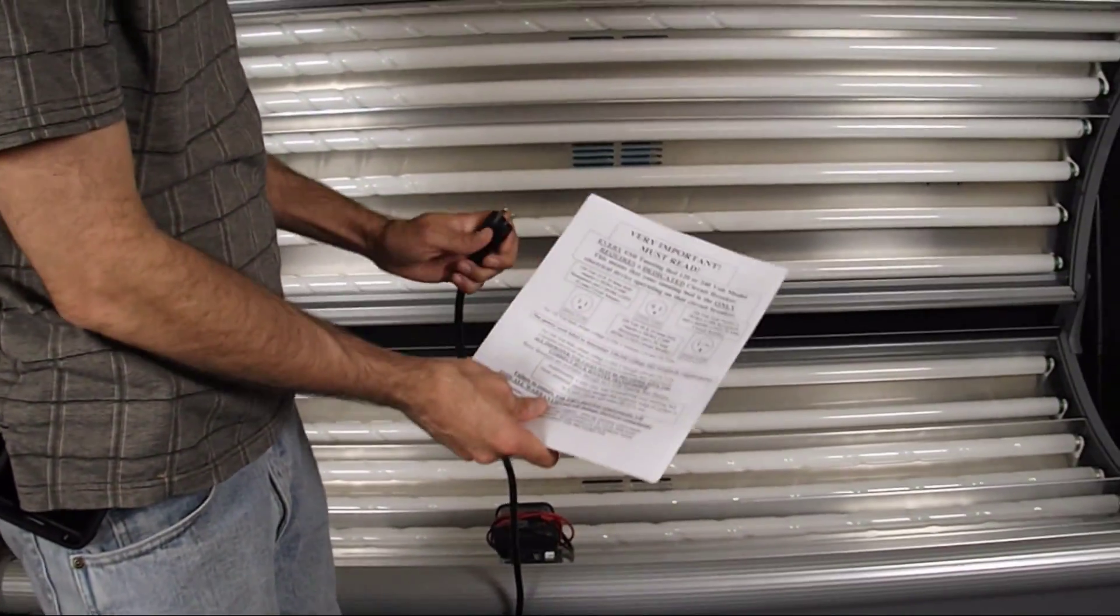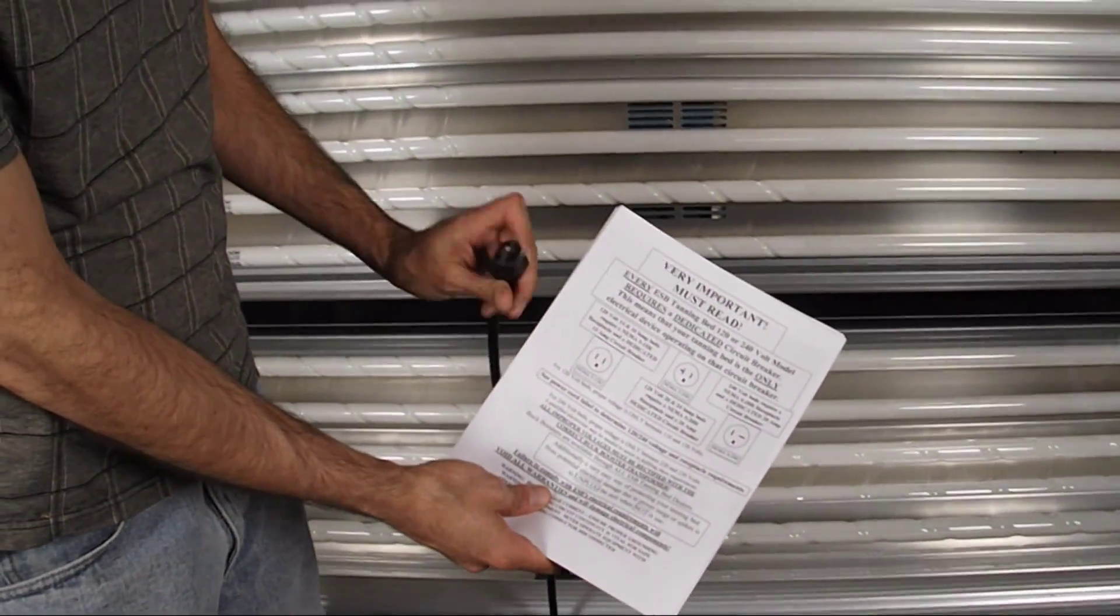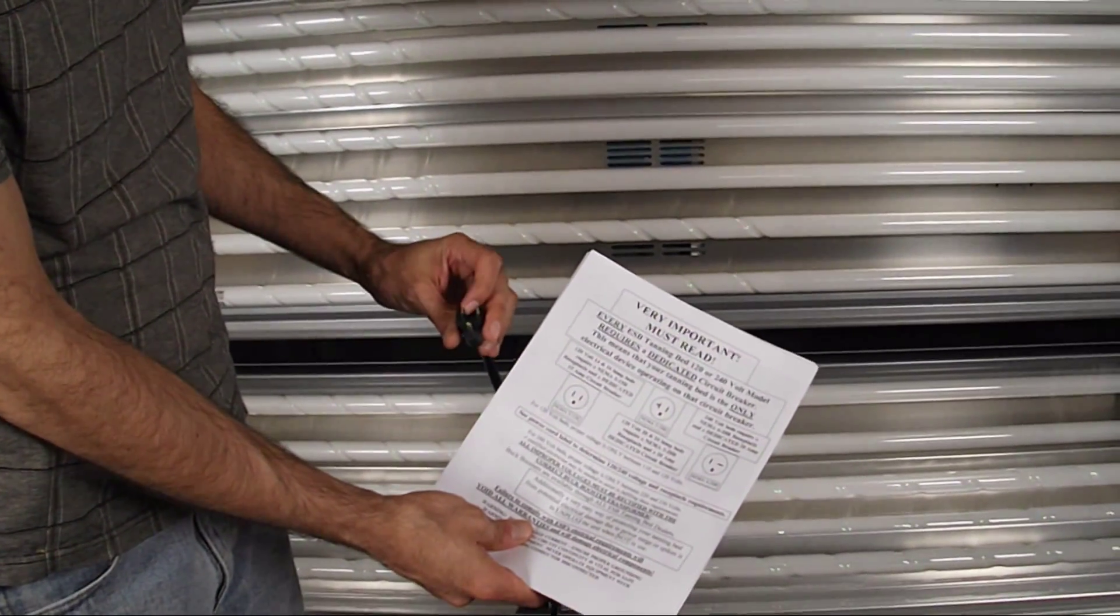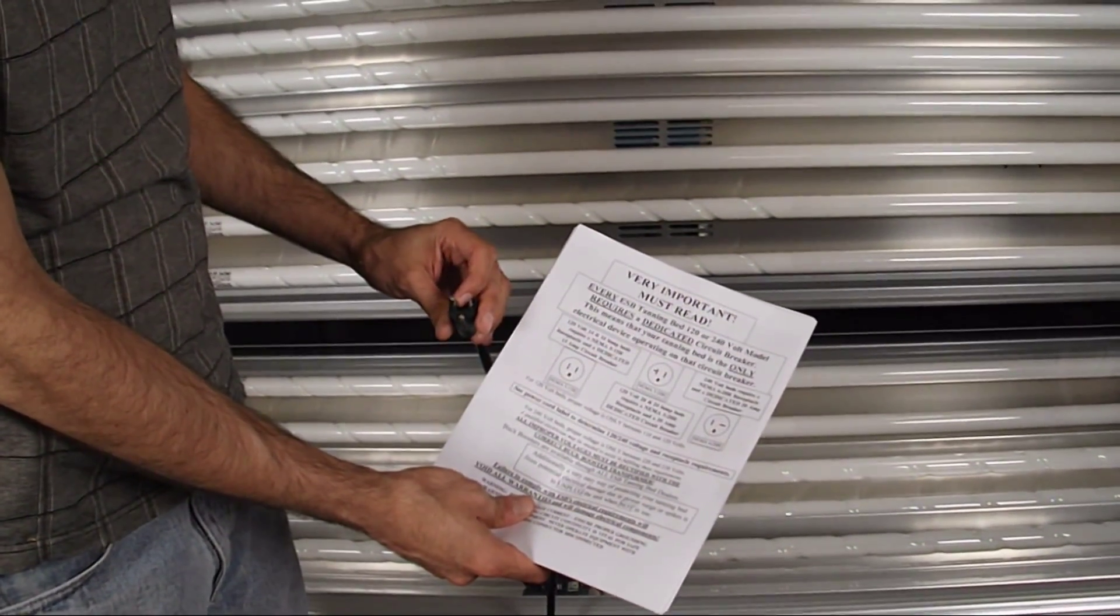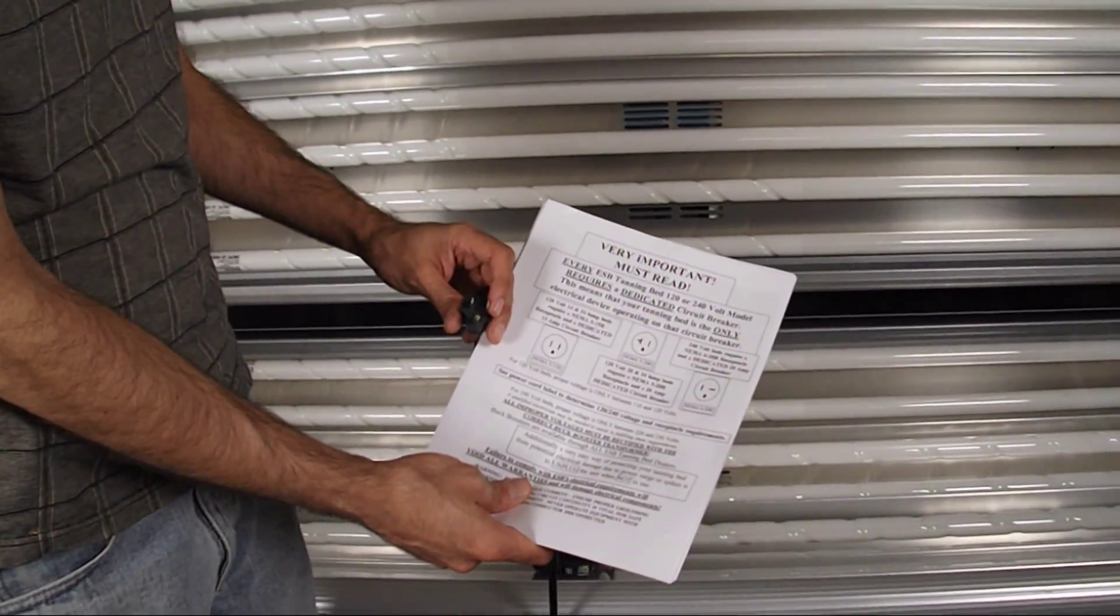So you see this model here has 16 lamps in it and it has a plug where the two blades are parallel with each other. And this is a 15 amp configuration, so you could put a 15 amp breaker on that.